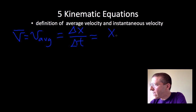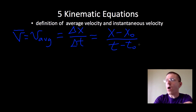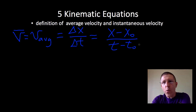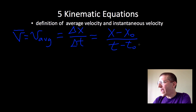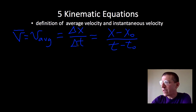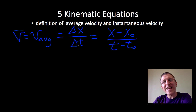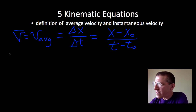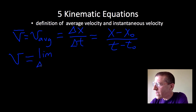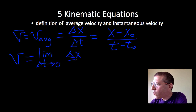Another way to express this: X final minus X initial, over T final minus T initial. Whenever you have a delta, it's always final minus initial. Now, if we wanted to find instantaneous velocity — that's how fast you're going at one instant of time — we can't have a large delta T. We've got to get that down as small as we can, down to an infinitesimal. Instantaneous velocity, which we simply express as V, is equal to the limit as delta T approaches zero of delta X over delta T.